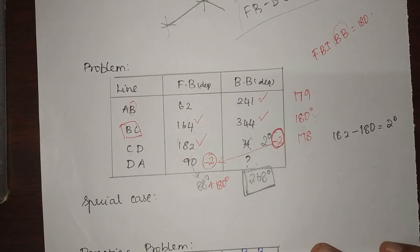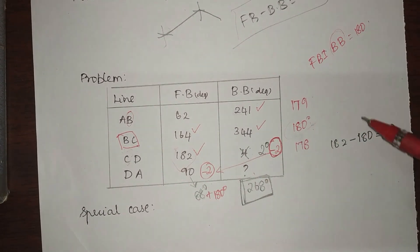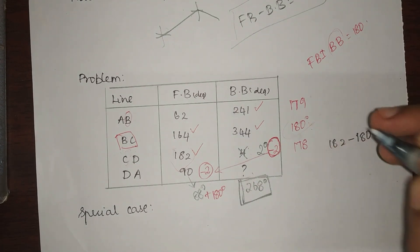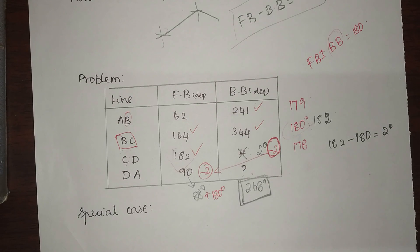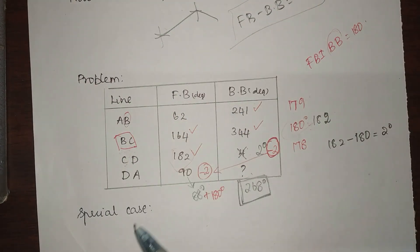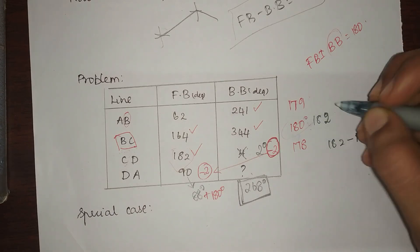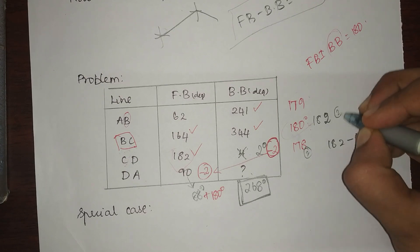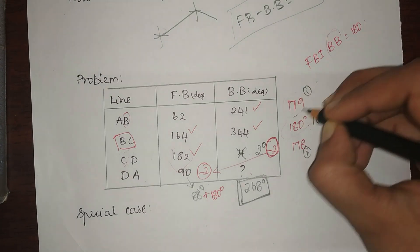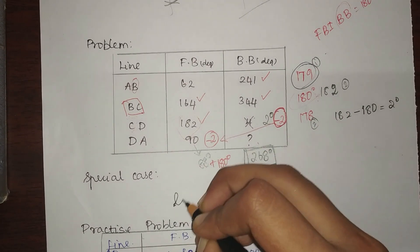There is also a special case: if none of the differences equals 180 degrees — for example, if the values are 179, 182, and 178 — then I have to choose a reference line based on the least difference from 180 degrees. Here, 179 is closest to 180 with a difference of only 1, compared to 2 for the others. So I take the station with the least difference as my reference line.